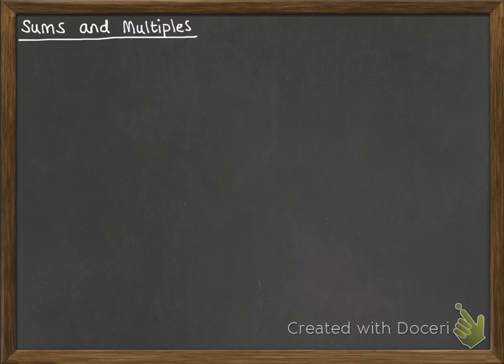Now, sums and multiples. We're going to think about the difference in calculations between adding up repeated items from your distribution versus multiplying up. In this case, x1 plus x2 plus x3 is not the same as doing 3 times x.